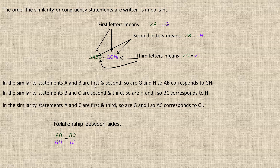And lastly, A and C are the first and third letters; G and I are the first and third letters. So AC and GI match up and correspond — that's why that's the other part of the proportion. And that's the end of the tutorial.